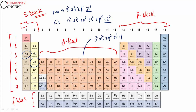For a d-block element the configuration ends in a d sub-shell, for example 3d6, 4s2 — the last electron enters the d sub-shell, making it a d-block element. For p-block, take carbon: its configuration is 1s2, 2s2, 2p2 — last electron enters the p sub-shell, so it is a p-block element. In summary: s-block — last electron enters s sub-shell; d-block — d sub-shell; p-block — p sub-shell; and the same applies to f-block.